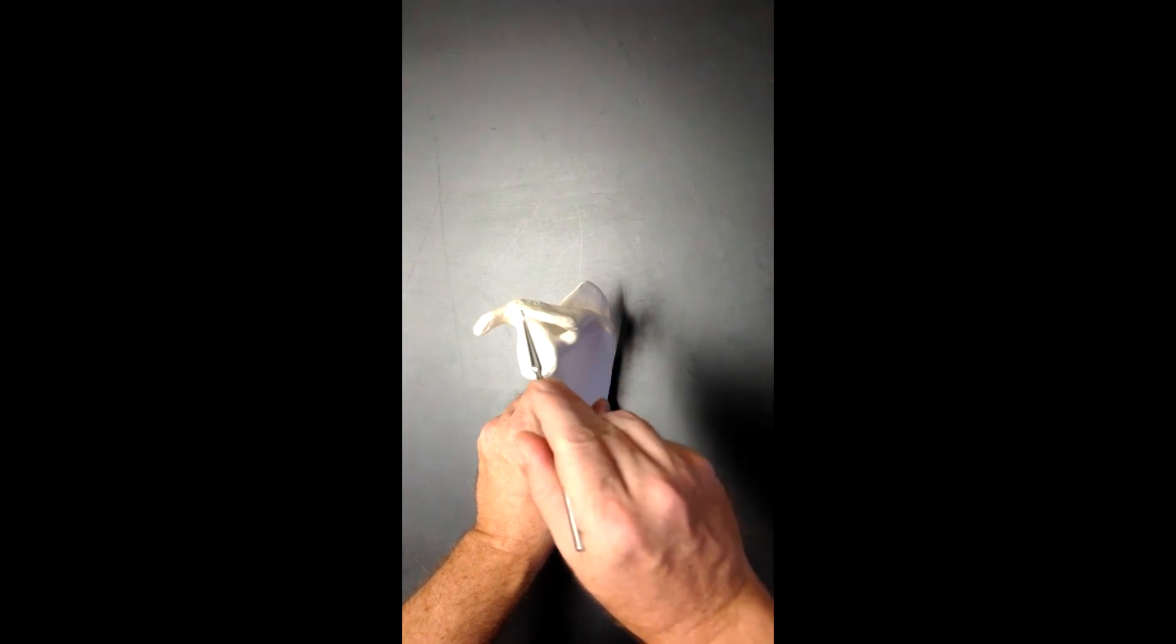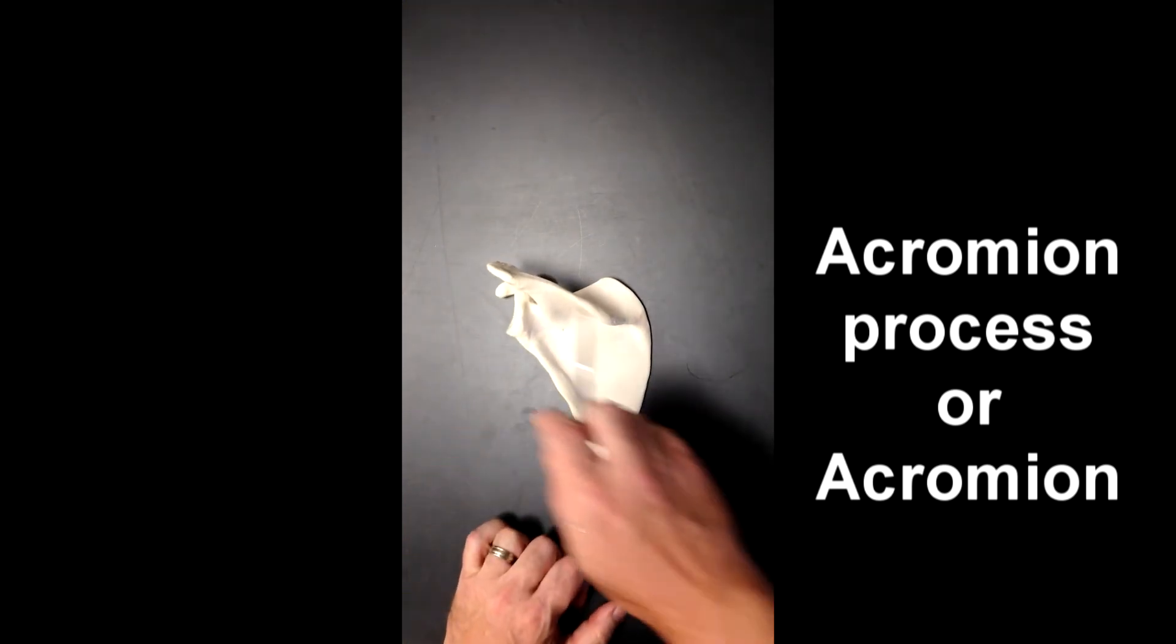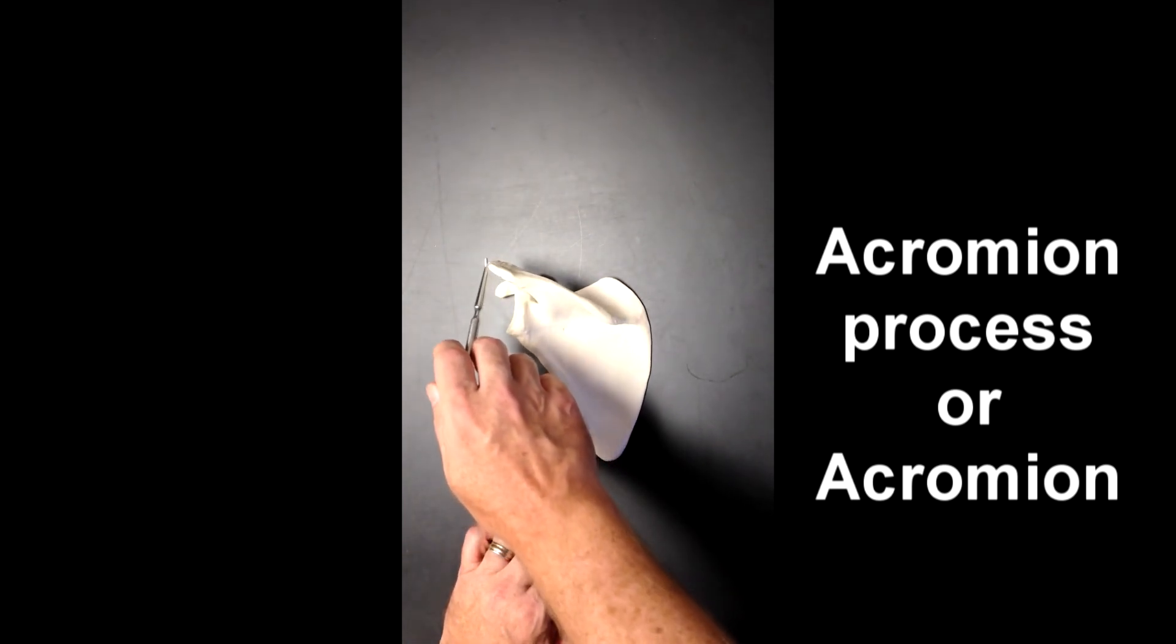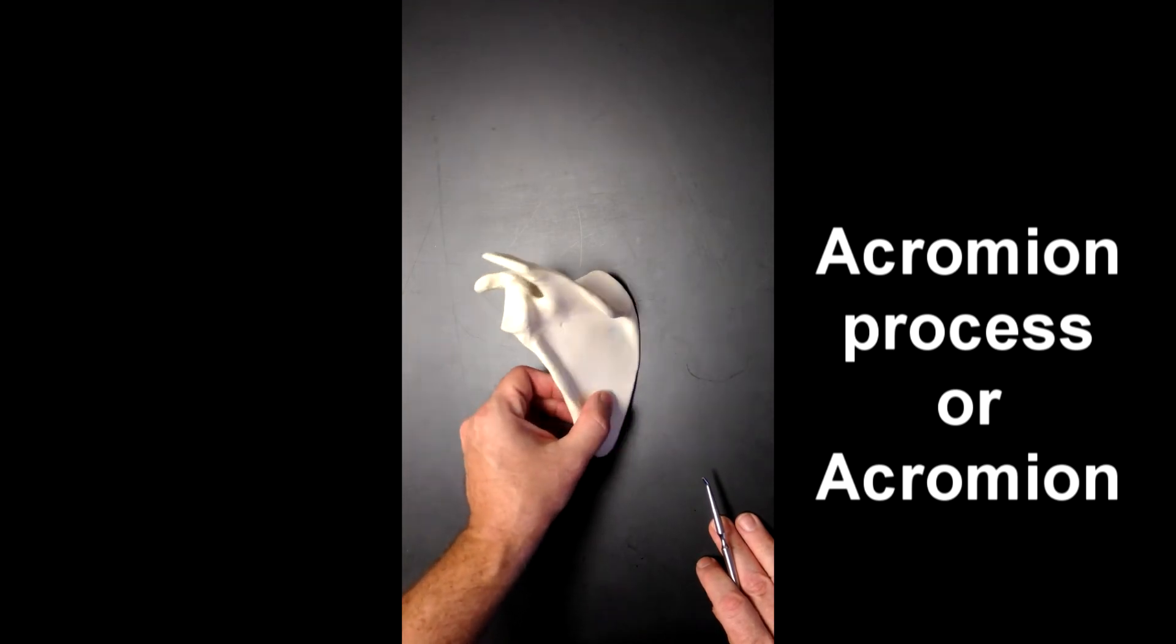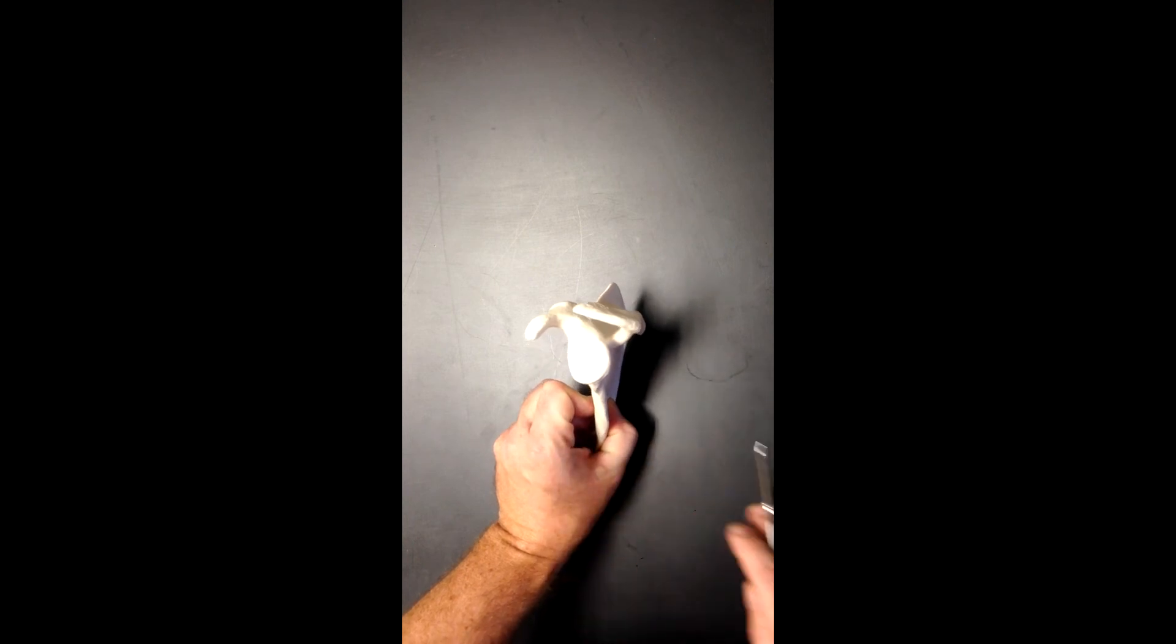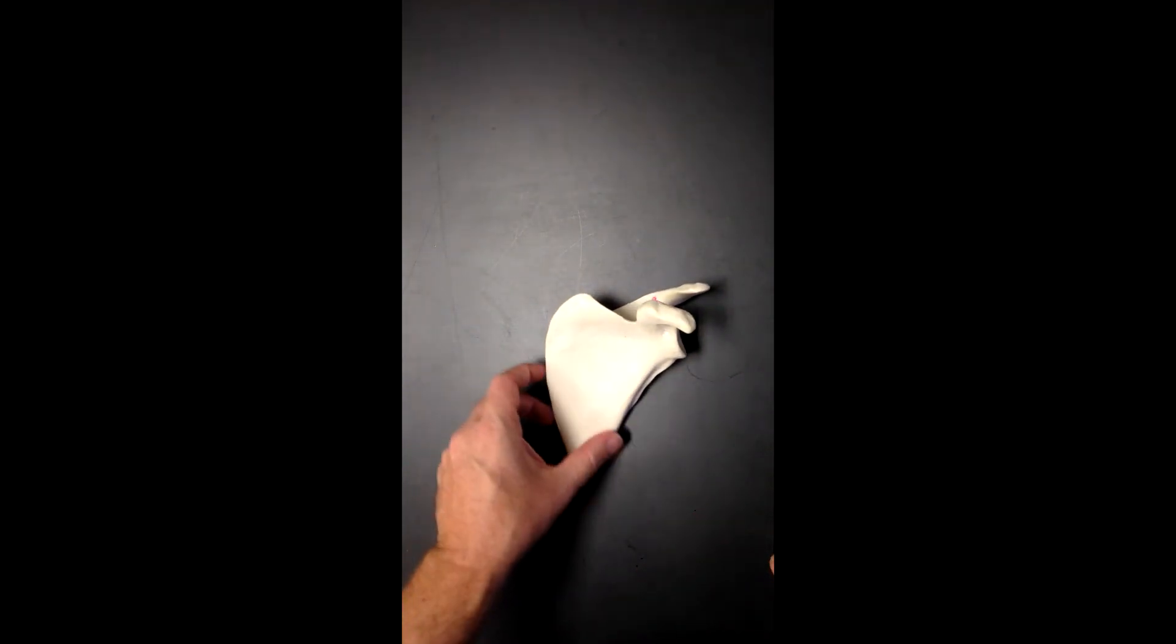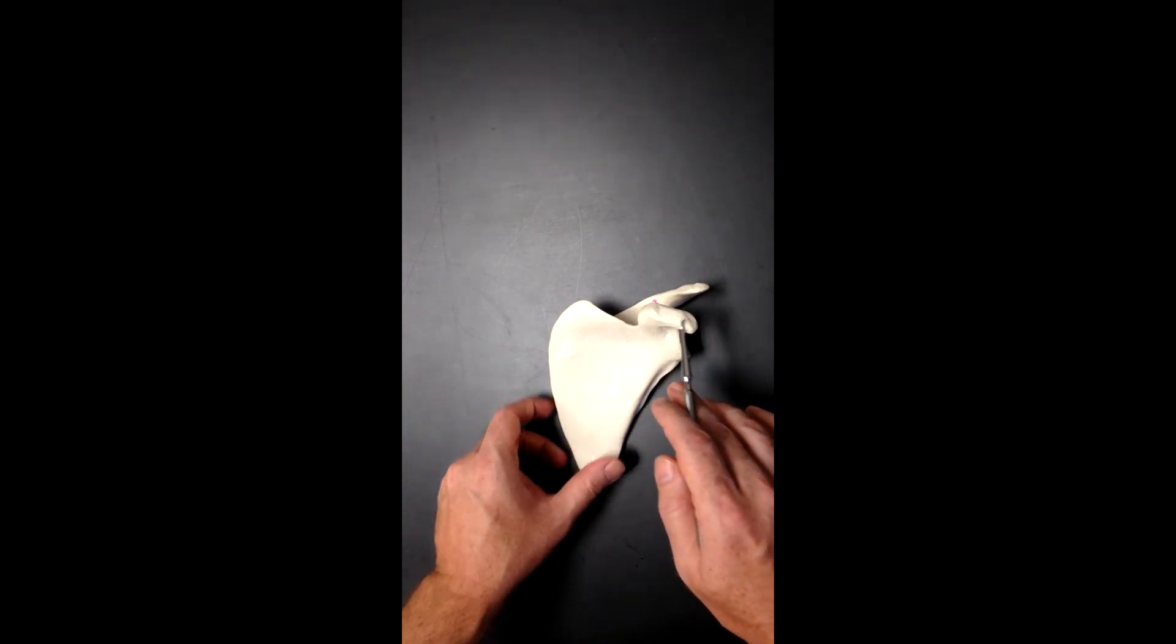This structure right here is the acromion process. We can see it on the posterior view here. Coming back up to the lateral view, we can see this structure right here. And if I turn the scapula so that you can see the anterior, we can see this structure a little bit better.